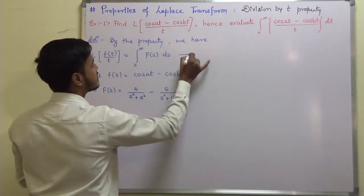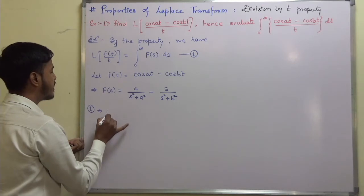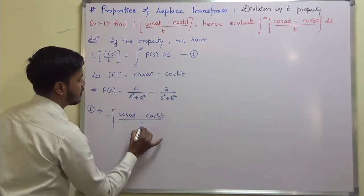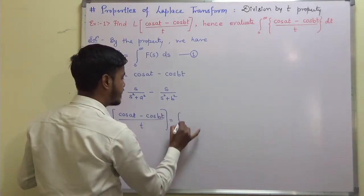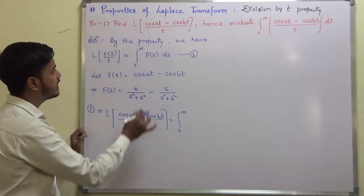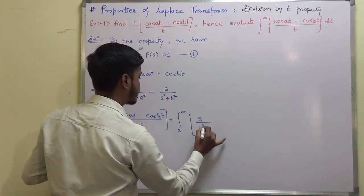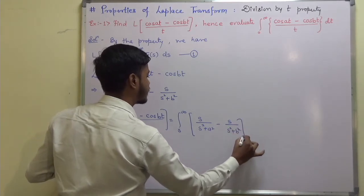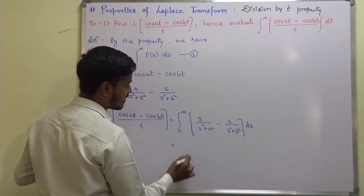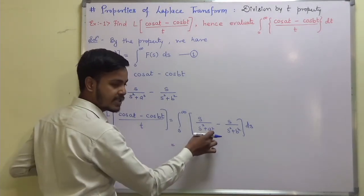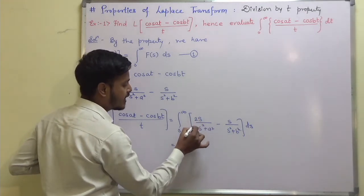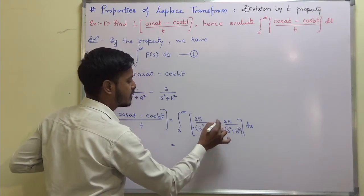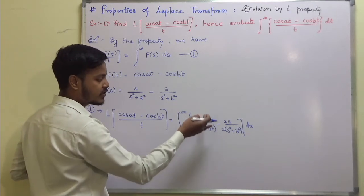Call this equation 1. From equation 1, the Laplace transform of (cos at - cos bt)/t equals the integration from s to infinity of F(s) ds. To integrate s/(s²+a²), note that the derivative of (s²+a²) is 2s, so we multiply and divide by 2.